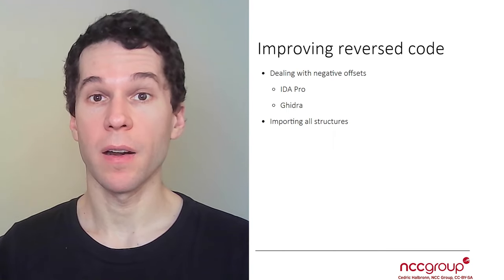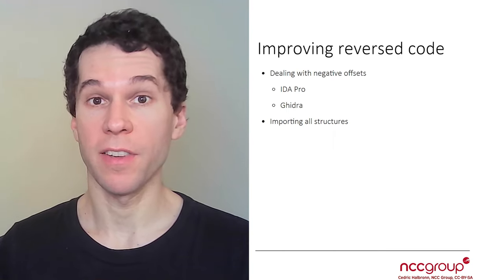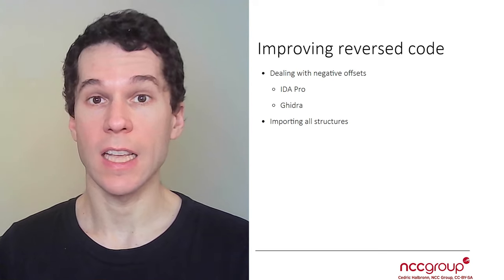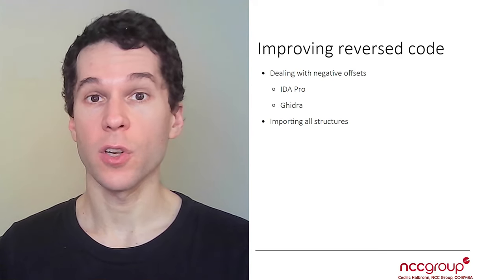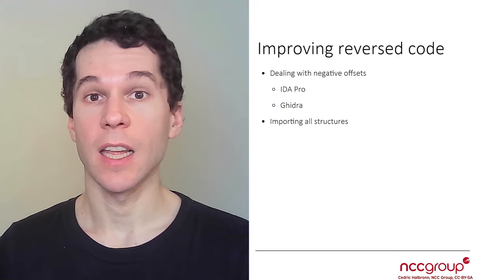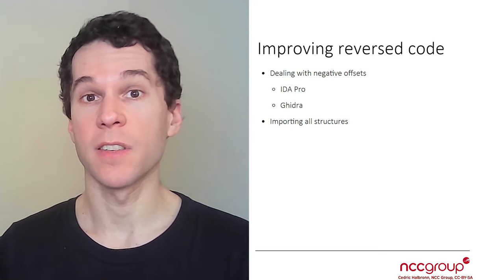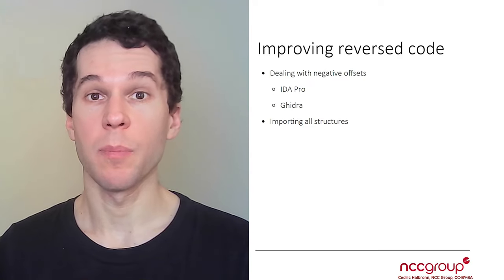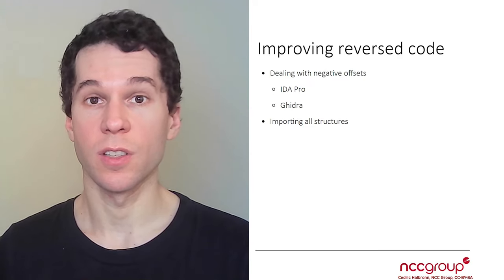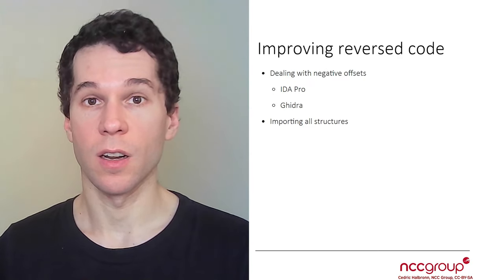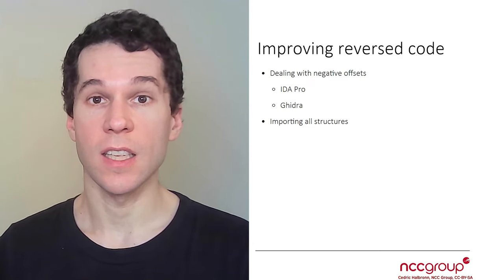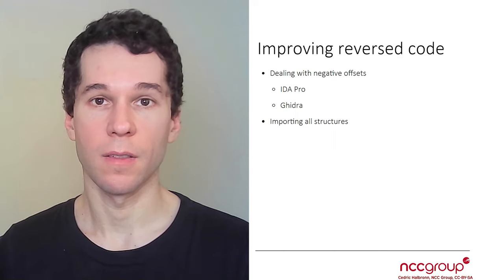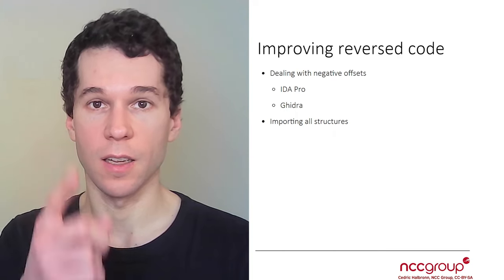So how do we get better binary diffing? There are two aspects. The first one is about dealing with negative offsets. The second one is about importing structures into Ghidra so all the accesses to the objects make sense. Let's get started!